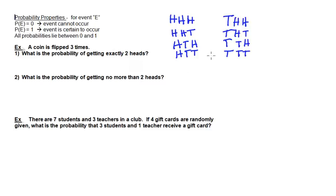We see that there are a total of eight outcomes, and that will be our denominator. Now we want to find the probability of getting exactly two heads by looking at those outcomes that have exactly two heads. Looking through the list: head, head, head does not qualify. But head, head, tail does have two heads, and so does the next outcome. Head, tail, tail does not. Then tail, head, head has exactly two heads, and the remaining three do not qualify. So there are three possibilities, meaning the probability of getting exactly two heads is three eighths.